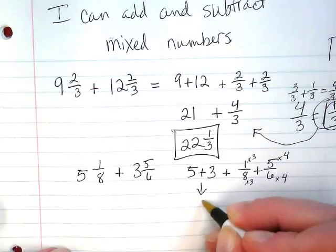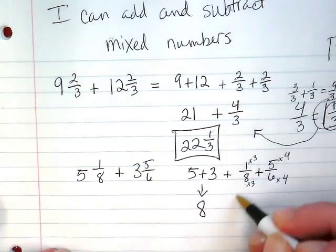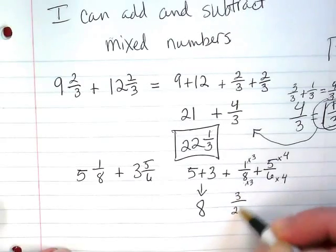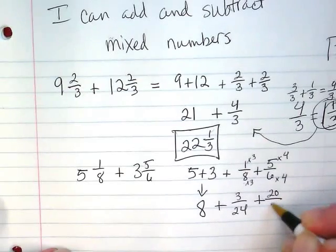So my 5 plus 3 I can bring down as 8, and I have that whole number 8. And now I'm going to have 3 over 24 added on to this, plus 20 over 24.